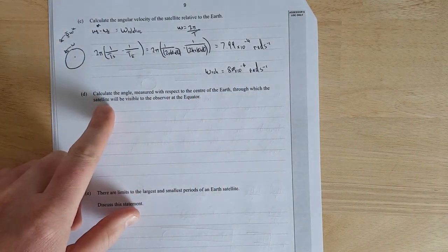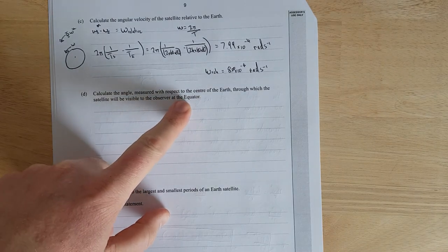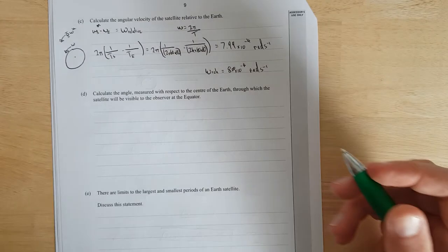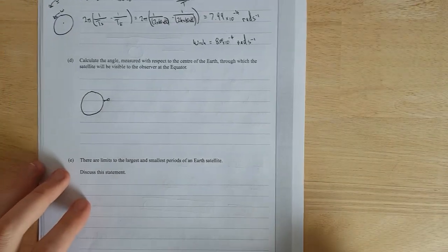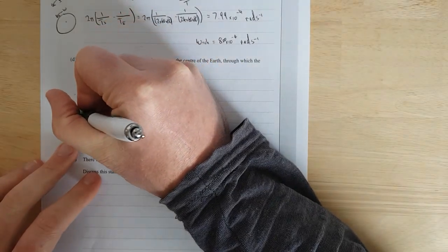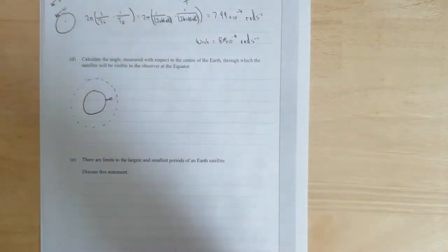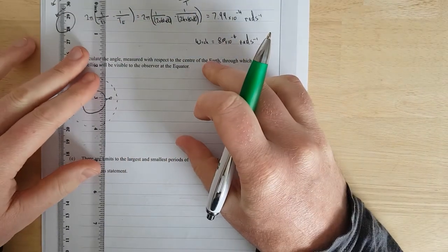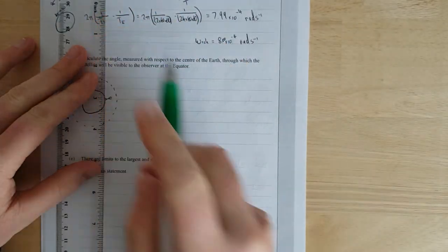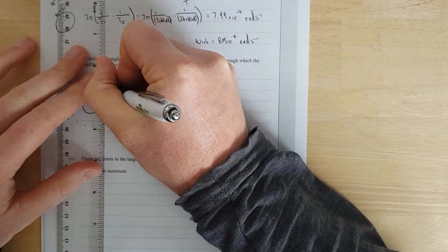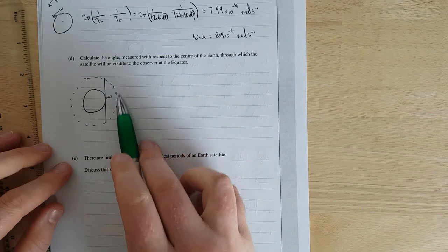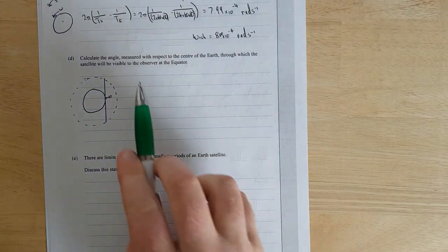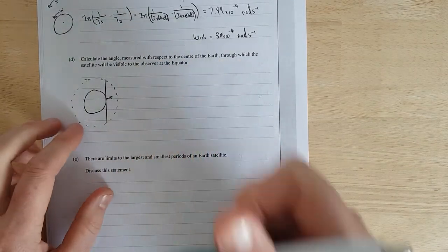Calculate the angle when measured with respect to the centre of the earth through which the satellite will be visible to the observer at the equator. Right so I'm going to draw some pictures. I'll draw the earth and I'll spin this round I'll draw a little man if I can here's my little man and I'm going to draw the orbit of the satellite like so. There's the satellite and I'm going to get my ruler and my little man if he was on the surface if he looked to the left which would be that way, this will be the area that he'd be able to see so this area up here will be the whole area he'd be able to see and it's asking the angle.